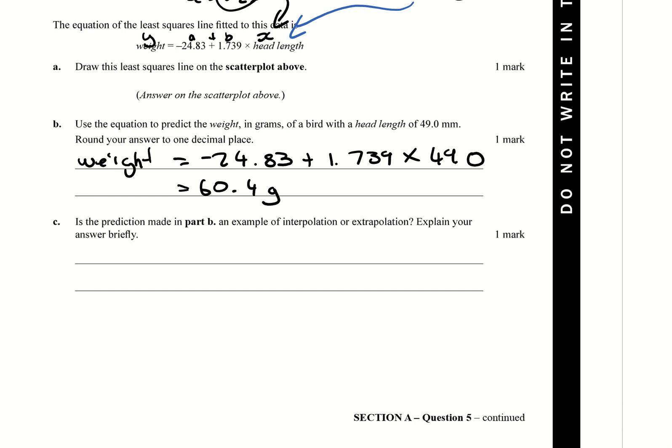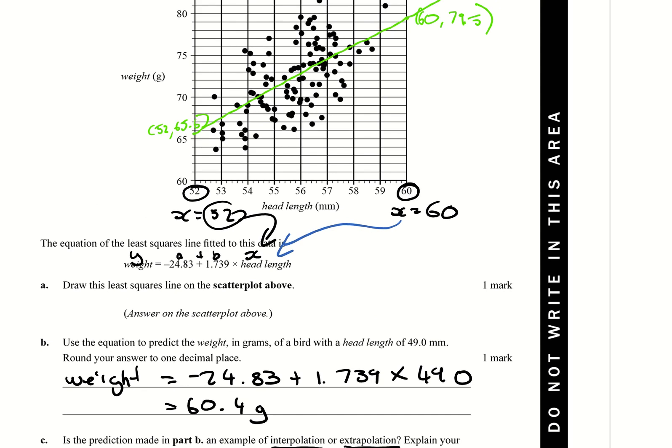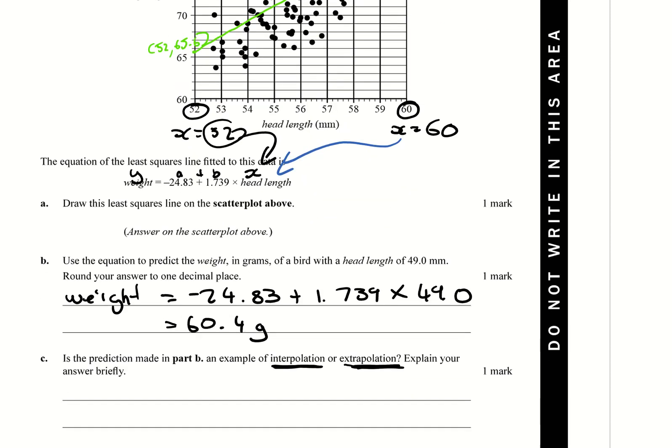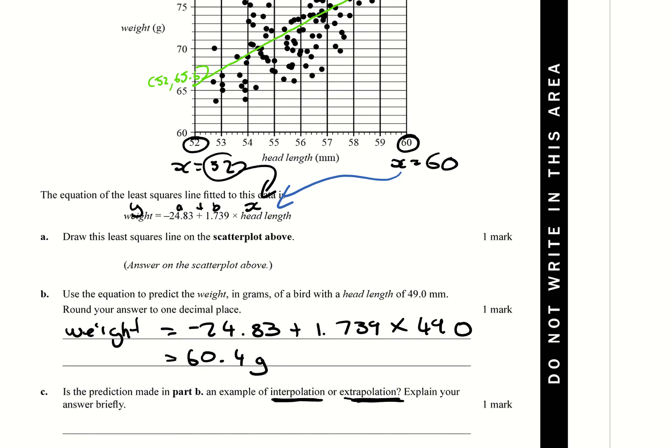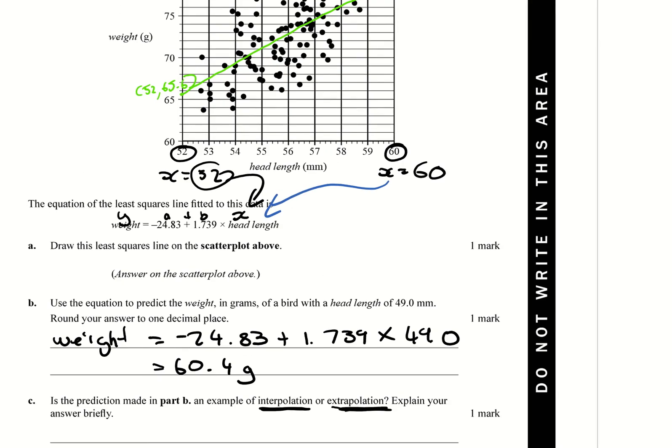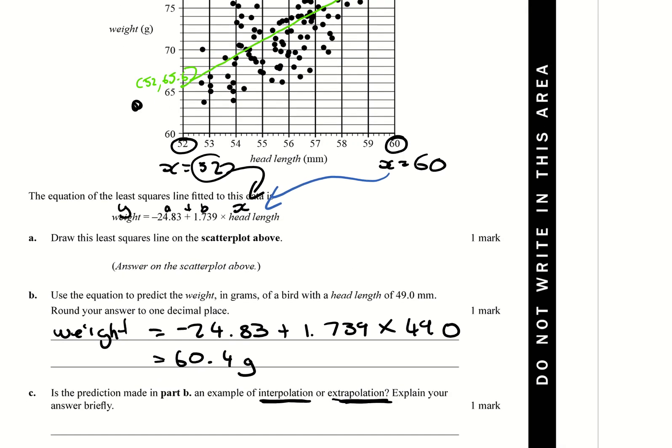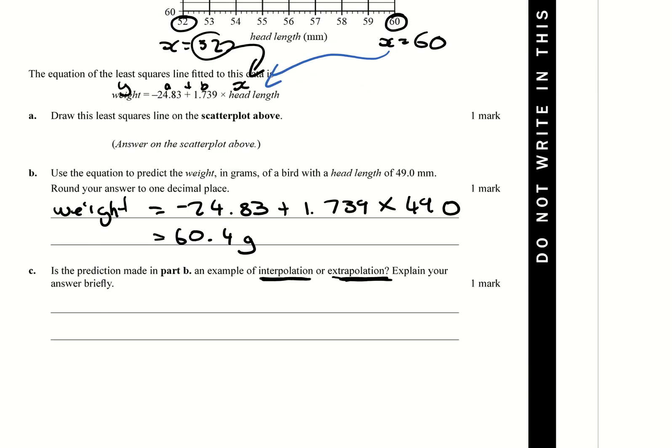It says is the prediction made in part B an example of interpolation or extrapolation? Remember, if your prediction is within where your data can be found, so within this area here, then it's interpolation. If it's outside of that, it's called extrapolation. Now we're saying, looking at the head length down here is 49, our first data point is after 50. So in this case we're making a prediction out here somewhere, and because it's out there, it's going to be extrapolation.